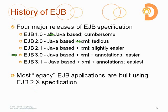EJB 2.1 tried to standardize those supporting XML files so you wouldn't need three separate XML files per EJB — reducing it down to two. But there still wasn't much intelligence applied by the server at deployment; it still derived and configured everything from XML. The configuration approach was the dominant strategy, but it remained cumbersome.